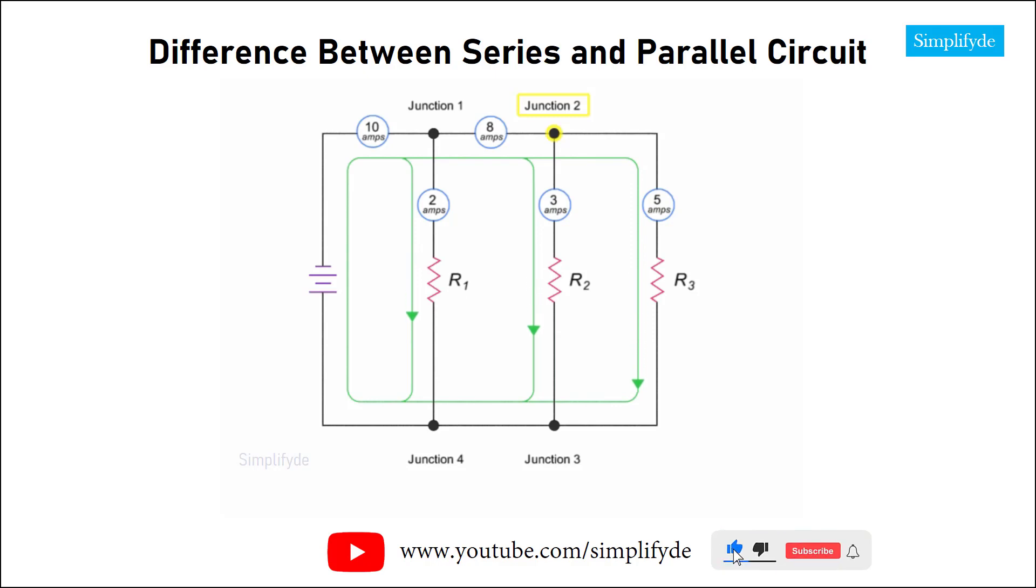As the current returns through junction 3, the 3 amp and 5 amp values recombine to give an amp value of 8. At junction 4, the 2 amps and 8 amps currents recombine to equal the 10 amps of the original source current. An important difference in a parallel circuit is that voltage is the same throughout the circuit.